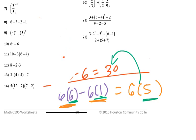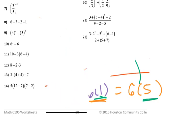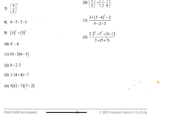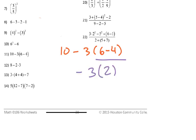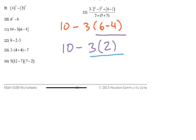Number eleven is 10 minus 3 times the quantity 6 minus 4. PEMDAS says do parentheses first: 6 minus 4 is 2. Then multiplication: 3 times 2 is 6. So we have 10 minus 6, which is 4.